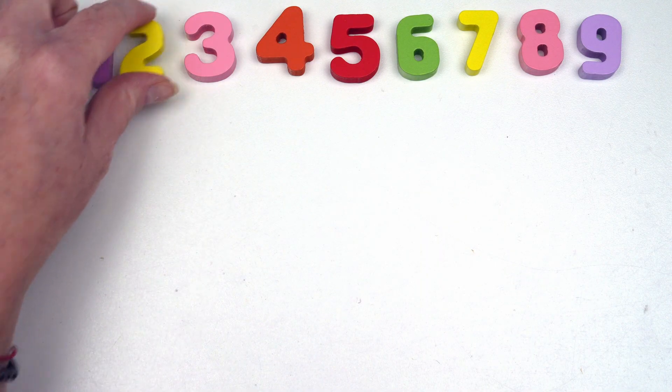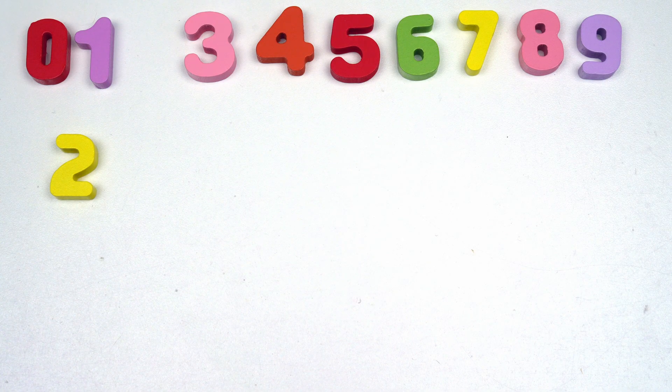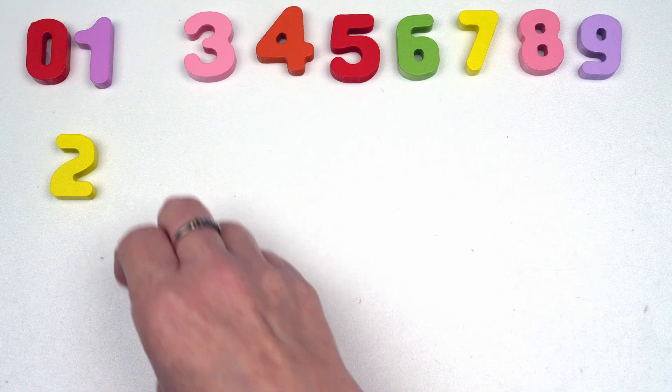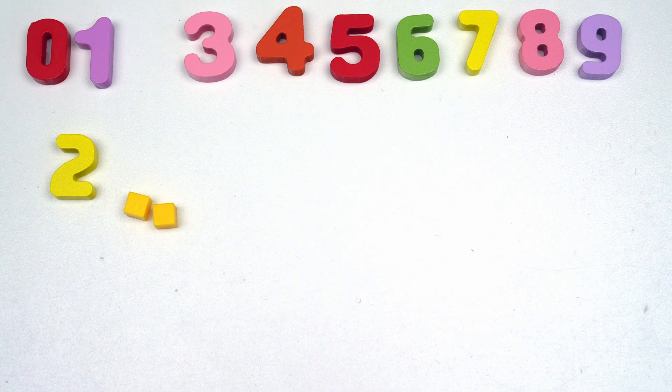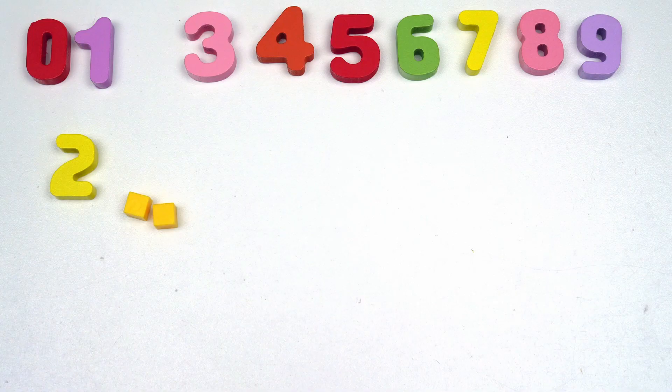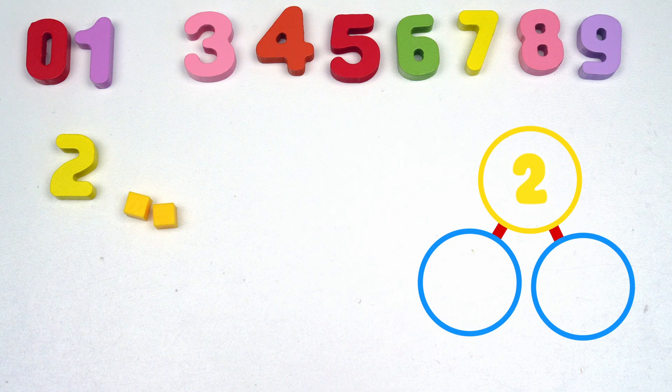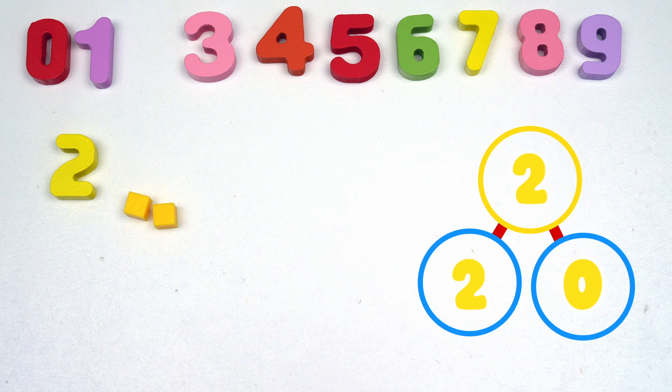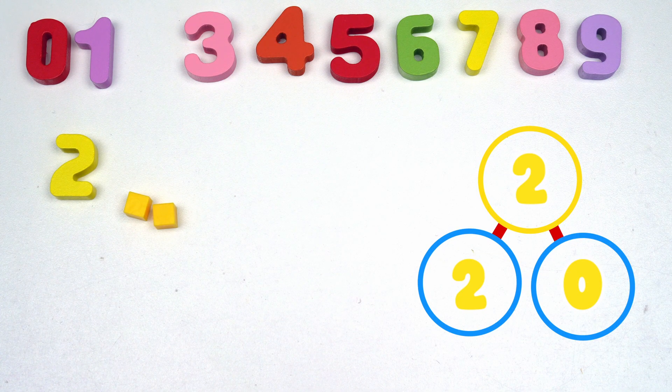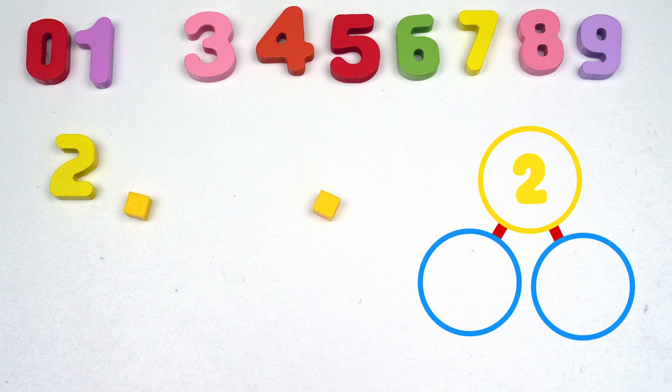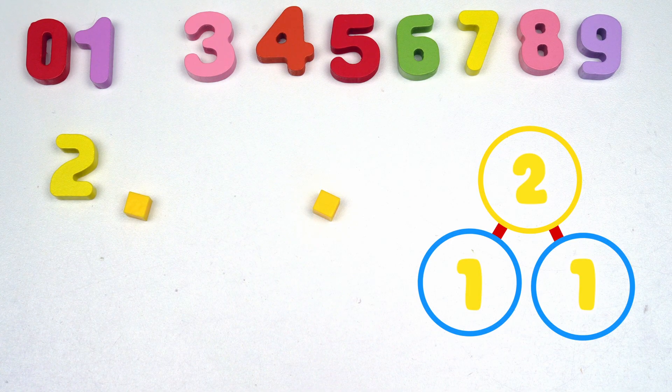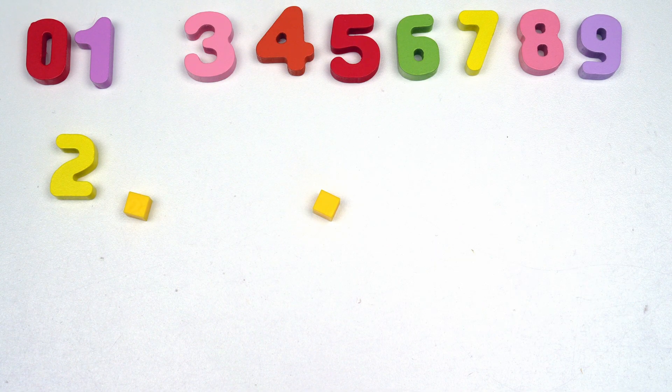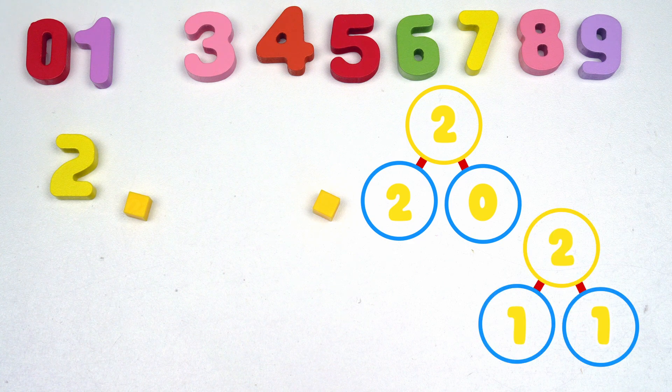This time we'll do number two. And let's get our blocks. One and two. So how many ways can we make the number two? We have one, two, and zero. So we have two and zero. And we have one and one. So the number two only has two number bonds, zero and two, and one and one.